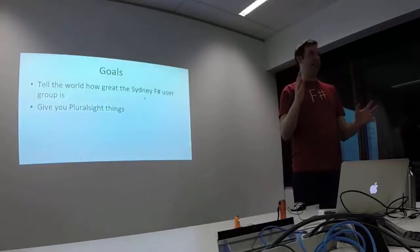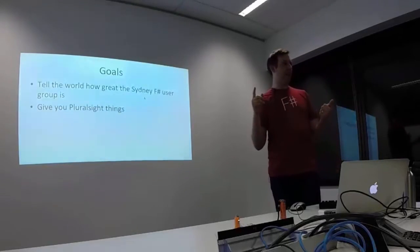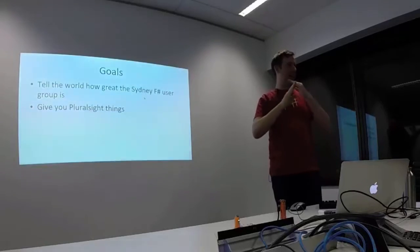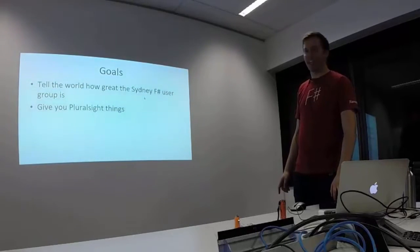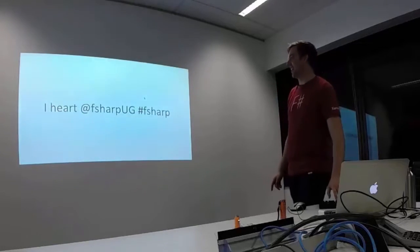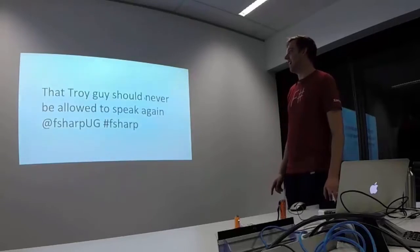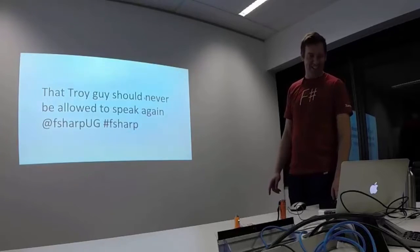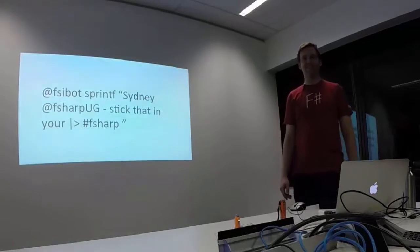If you have Twitter, start tweeting. There are some rules: you need to have F-sharp user group in there, so you have to mention F-sharp UG, and you also have to have hashtag F-sharp. There are no limits. Here are some example tweets: 'I heart F-sharp UG F-sharp.' Or 'The F-sharp user group in Sydney makes me a more sensitive lover.' Or 'That Troy guy should never be allowed to speak again, F-sharp UG F-sharp.' Or from George's thing earlier, 'FSIbot sprint F, Sydney F-sharp UG, stick that in your pipe operator.'